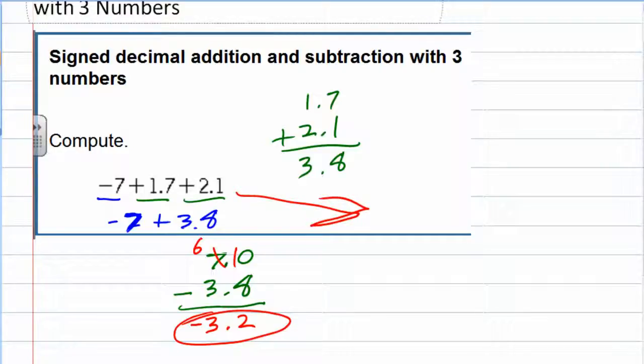So do the positive ones together, the negative ones together if we had had more than one. And then I can use the rules for addition when the signs are different to get our final answer.